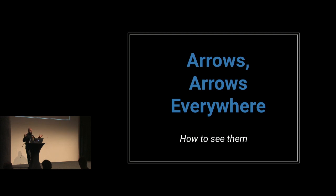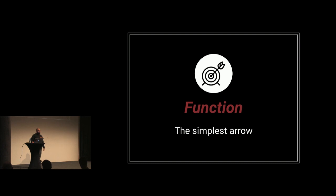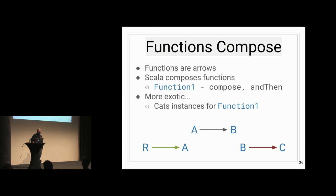So arrows everywhere and how to see them. I'm going to go into the shortest section of the talk, functions. The function is an arrow, okay? Scala composes functions. We have function one, compose, and then they're just flips of one and the other. And there's some more exotic instances of function that exist in cats as well. But the basic notion is that if I have an arrow from A to B and I have some other arrow where the type lines up either on the tip end or the tail end, I can compose them together arbitrarily. And that concludes the shortest section of the talk.